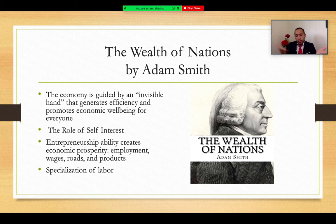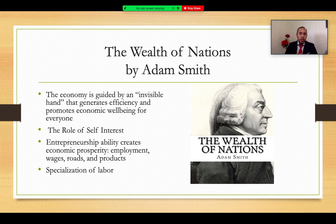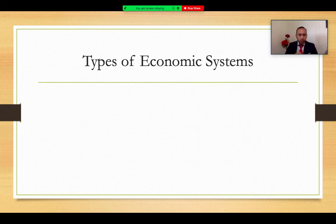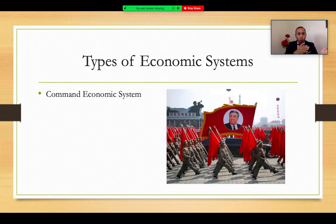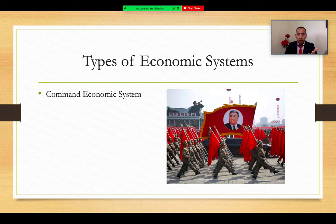Adam Smith is considered one of the early Classical economists and one of the early fathers of economic theory through The Wealth of Nations. Since then, different economic structures have arisen. Command economic systems still exist today — for example, North Korea, where a central authority determines all economic activity: what gets produced, how it gets produced, wage rates, media, and so on. Venezuela is another extreme example of a command socialist structure.